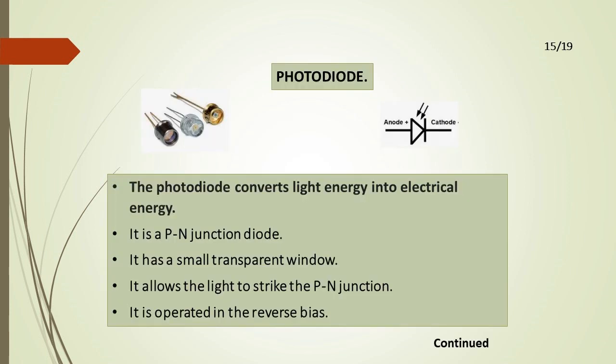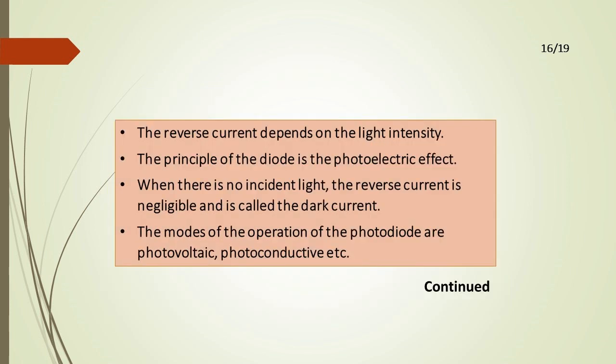Photodiode. The photodiode converts light energy into electrical energy. It is a PN junction diode with a small transparent window that allows light to strike the PN junction. It is operated in reverse bias, and the reverse current depends on the light intensity. The principle of the photodiode is the photoelectric effect. When there is no incident light, the reverse current is negligible and is called the dark current. The modes of operation of the photodiode are photovoltaic, photoconductive, etc.